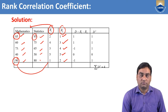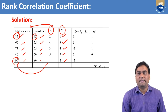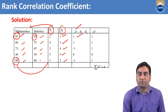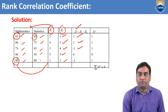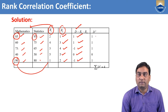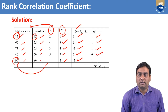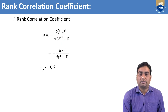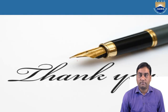Now we have the ranks. The remaining process is the same. Find d — the difference between two ranks: 2 minus 1 equals 1; 4 minus 3 equals 1; 3 minus 4 equals minus 1; 5 minus 5 equals 0; 1 minus 2 equals minus 1. Then find d square: 1, 1, 1, 0, 1. Sigma d square equals 4. Use the formula: rho equals 1 minus 6 sigma d square divided by n into (n square minus 1). Simplifying, we get rho equal to 0.8. Thank you.